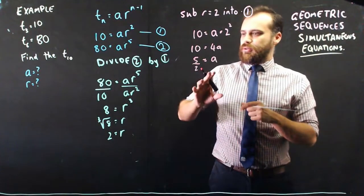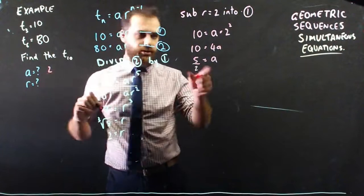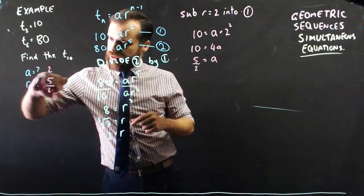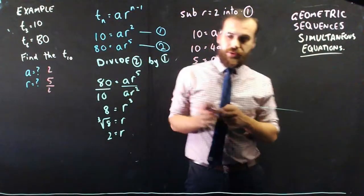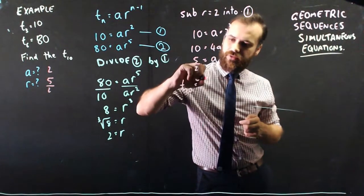Now finally, that's the hard bit. Now that we know that a equals 2 and we know that r equals 5 on 2, we can find the 10th term by saying term 10 equals a, 5 on 2, times 2 to the power of 9.